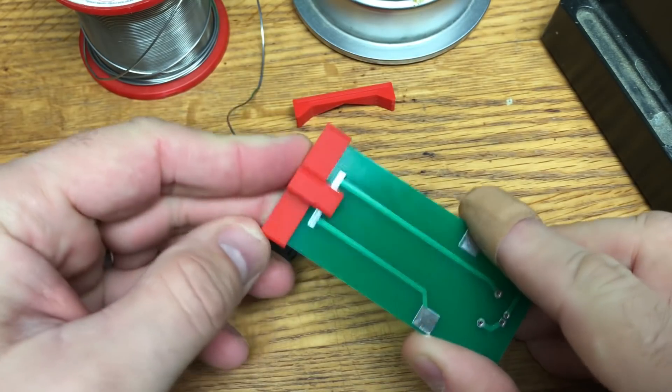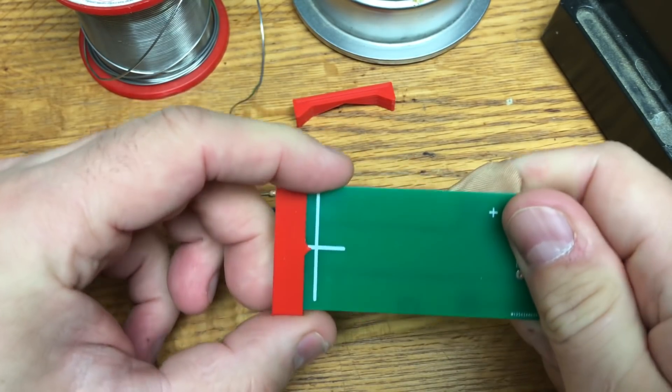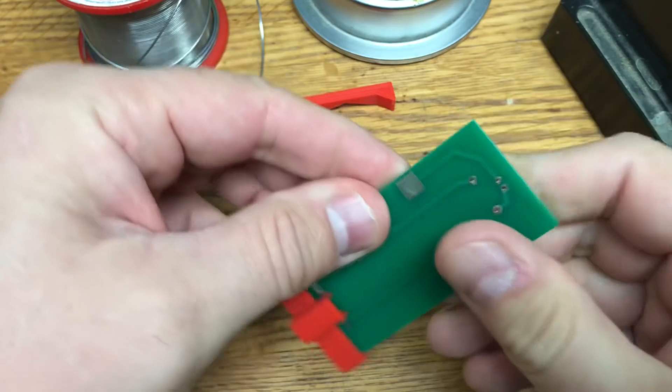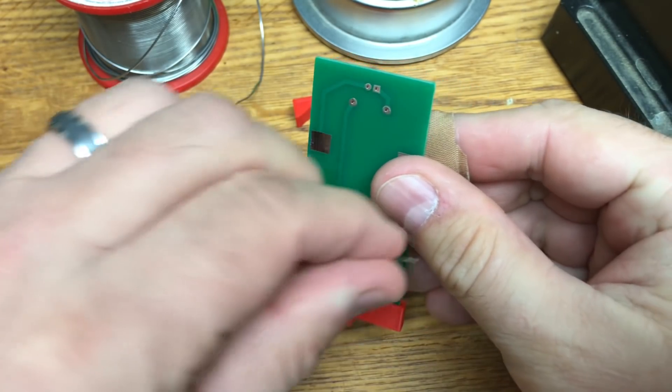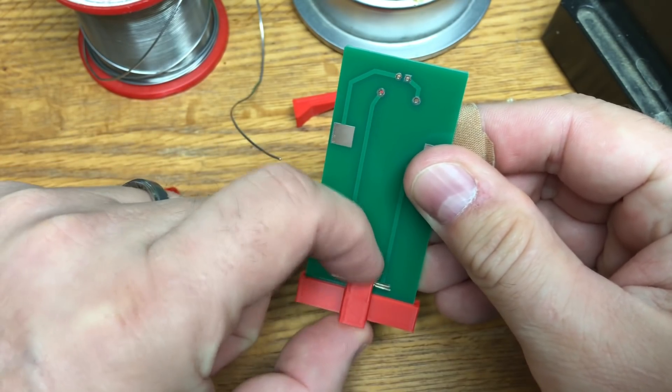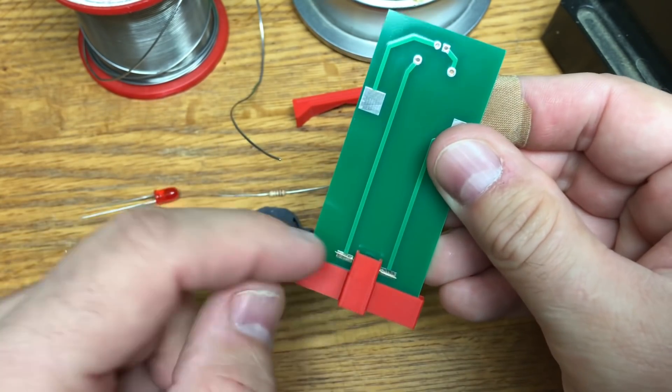So the first step is to slide that tool over the switch area and then I line up the arrow so it's right in line with the white X. Now I take the switch and I drop it in the hole. I have to push it in a little bit and then once it's in place you can see that the leads line right up with the solder pads.